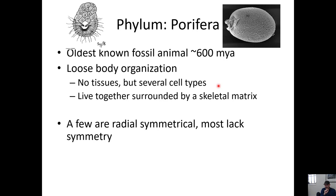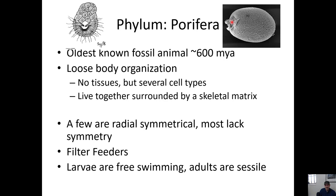Most of these groups have no body symmetry, so we don't worry about body symmetry for sponges — just say not applicable when talking about body symmetry with sponges. However, it's interesting that some of their larvae are kind of radially symmetrical. This group consists of filter feeders — they filter water through and pick out particles to eat. Their larvae are free swimming, but as adults they're sessile, meaning they're attached to the bottom and don't move.